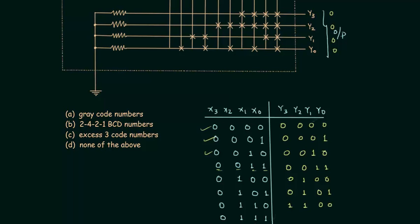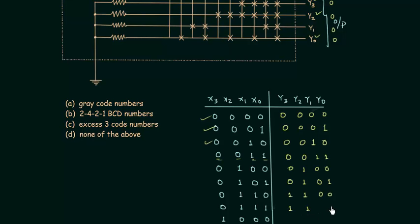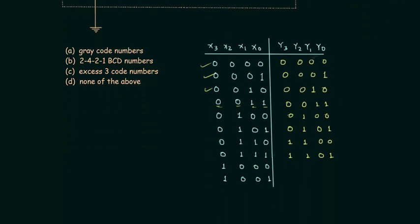For the fifth case D5 is the output and D5 is connected to y2 and y0, so y2=1 and y0=1. For the sixth case D6 is the output and it is connected to y3 and y2, so y3=1, y2=1, and the other two outputs equal 0. For the seventh case x2, x1, x0 equal 1 and x3=0, so D7 is the output. D7 is connected to y3, y2, and y0, so y3=1, y2=1, y0=1 and y1=0. For D8 the output is y3=1, y2=1, y1=1, y0=0, and for D9 all four outputs equal 1.